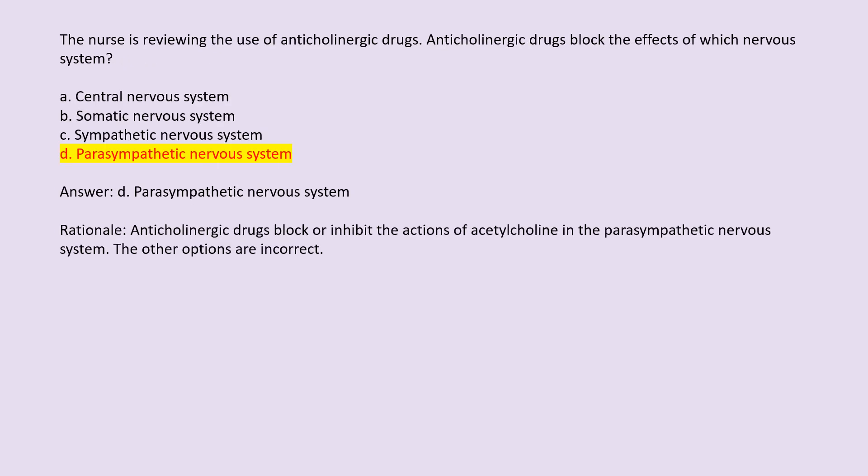Answer: D. Parasympathetic nervous system. Rationale: Anticholinergic drugs block or inhibit the actions of acetylcholine in the parasympathetic nervous system. The other options are incorrect.